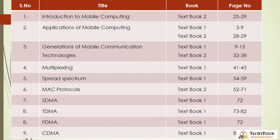Unit 1: Introduction. There are 9 topics in Unit 1. First topic: Introduction to Mobile Computing — Textbook 2, page numbers 25 to 29. Second topic: Applications of Mobile Computing — Textbook 1 pages 3 to 9, and Textbook 2 pages 28 to 29. Third topic: Generation of Mobile Computing Technologies — Textbook 1 pages 9 to 15, and Textbook 2 pages 32 to 38.